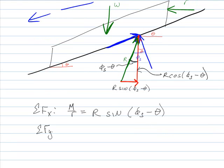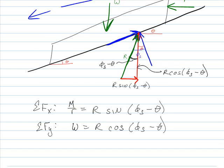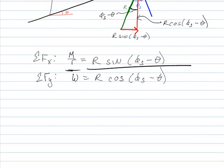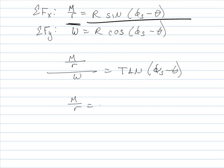Next I'm going to do sum of the forces in the y direction. I've got that W equals R cosine phi s minus theta. Now I can divide each side. So I've got M over R divided by W equals tangent phi s minus theta. So M over R equals W tan phi s minus theta, or M equals Wr tan phi s minus theta.